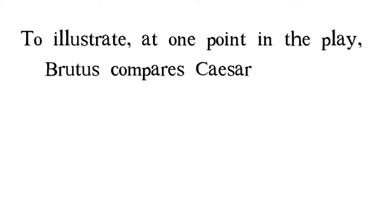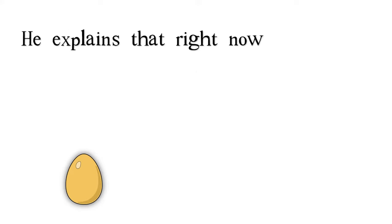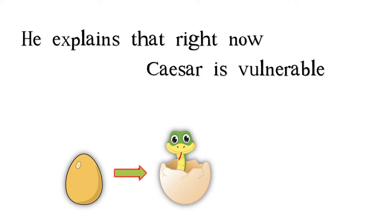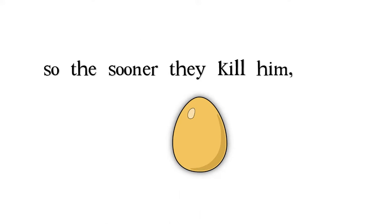To illustrate, at one point in the play, Brutus compares Caesar to a serpent's egg. He explains that right now Caesar is vulnerable, but eventually he'll become deadly. So the sooner they kill him, the better.